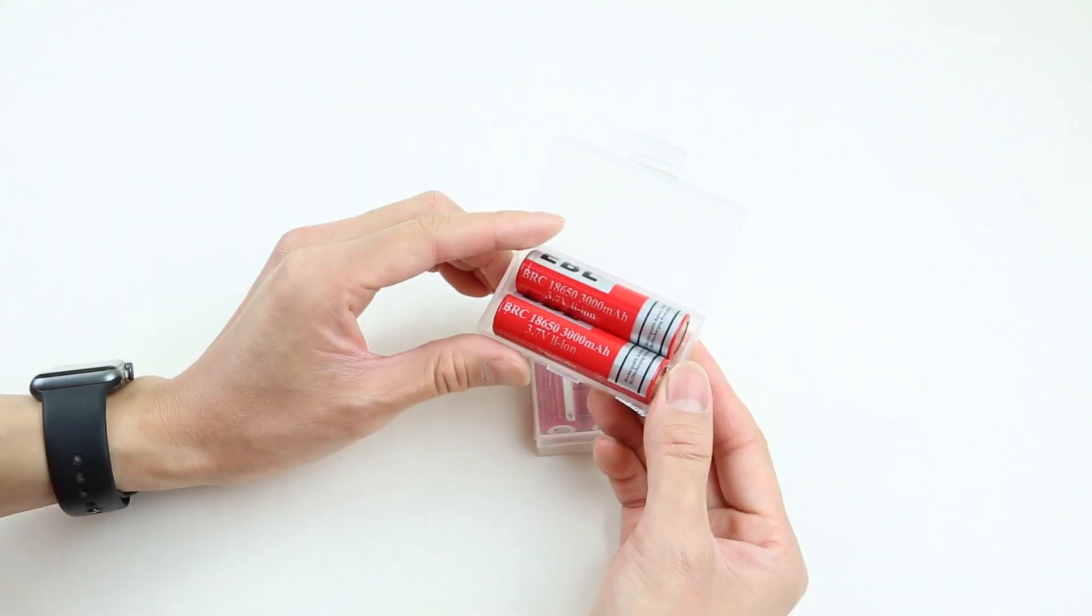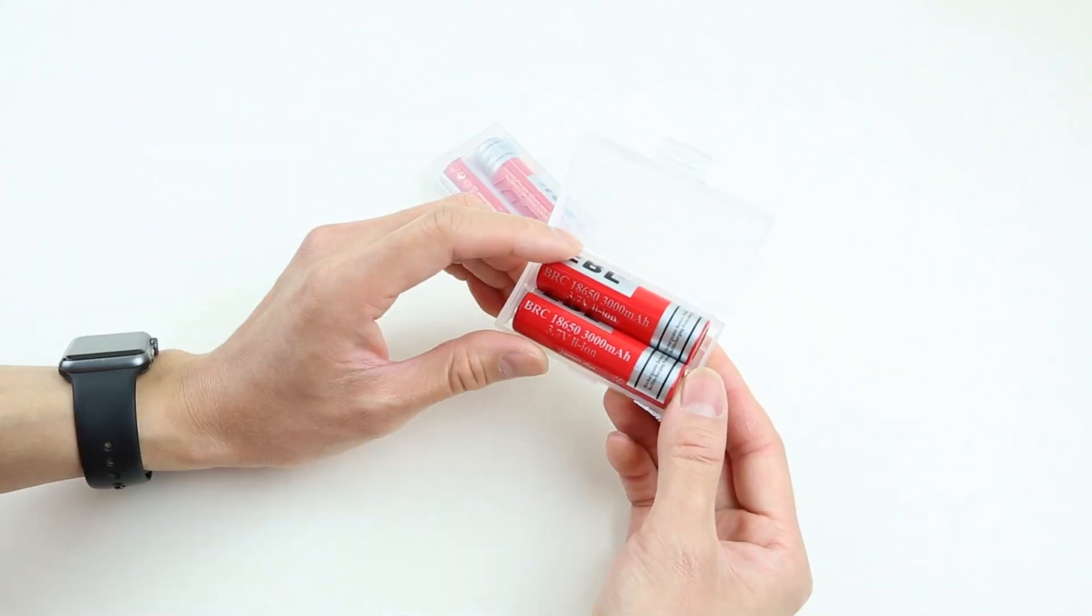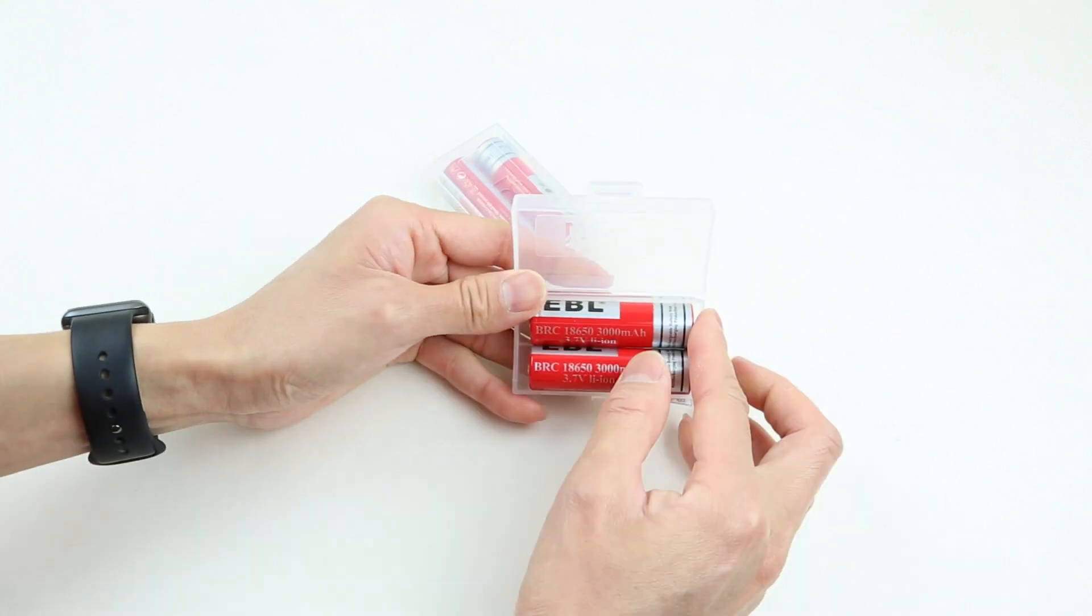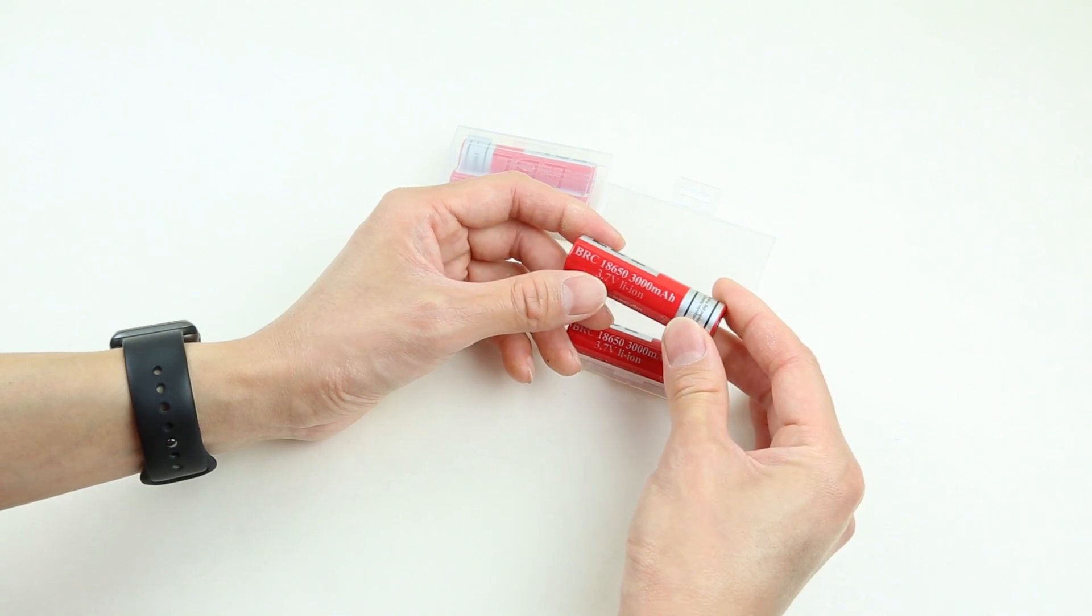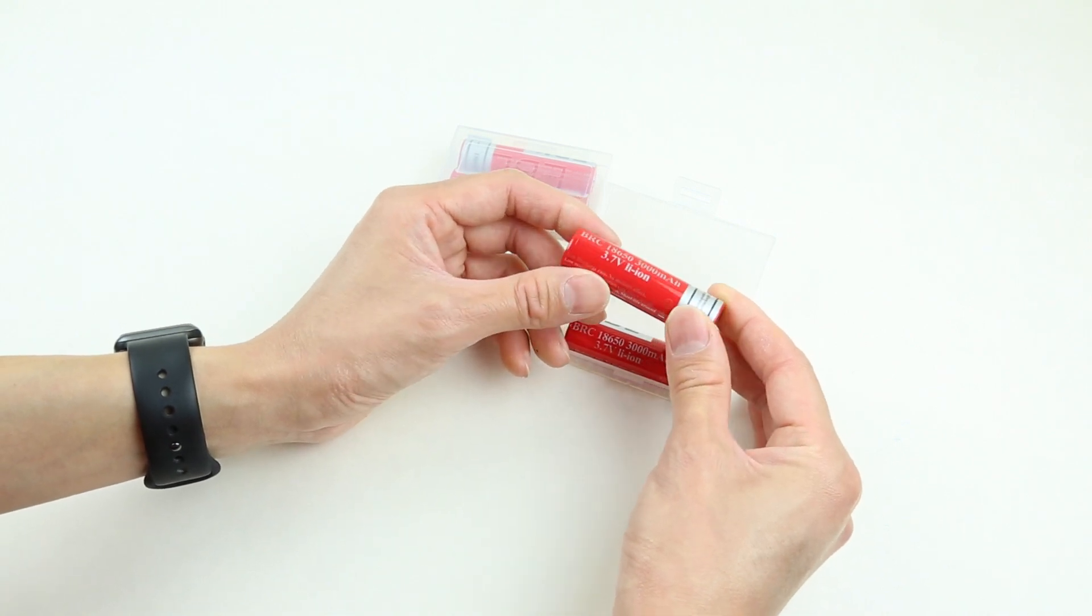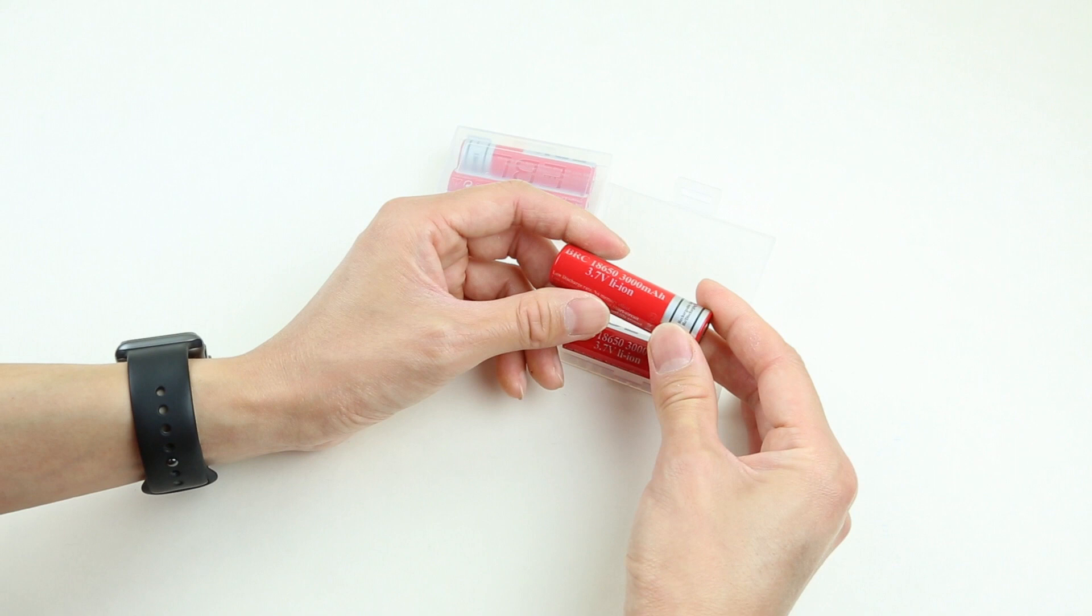As we open the case, we can see two 18650 cells rated at 3,000 milliamps. Let's have a closer look at the battery. We can see the branding EBL, and under that we have the 18650 3,000 milliamp 3.7V lithium-ion writing on it.